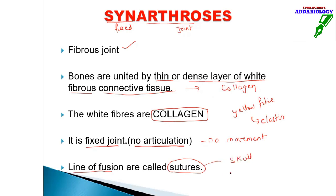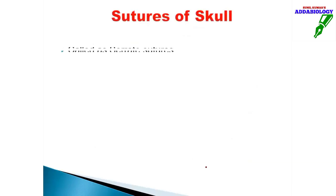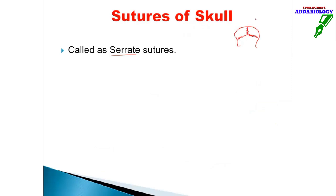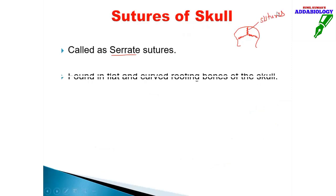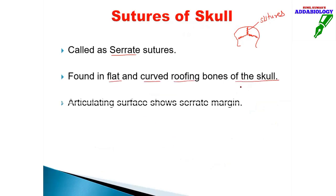The line of fusion in synarthrosis is called a suture, and sutures are found only in the skull. Sutures of the skull are called cirrate sutures. Drawing the skull, you can see all the zigzag lines dividing the skull into different parts — those zigzag lines are called sutures. They are found in flat and curved roofing bones of the skull, and the articulating surface shows a cirrate (serrated/irregular) margin.